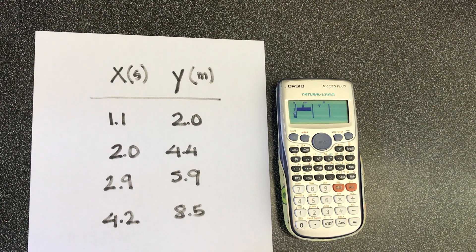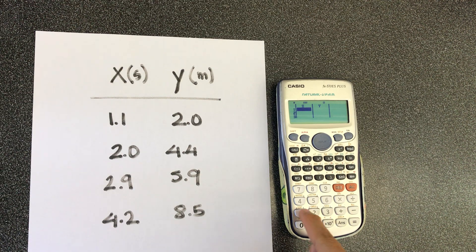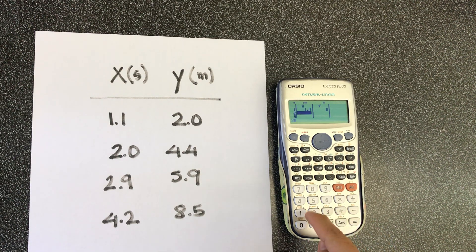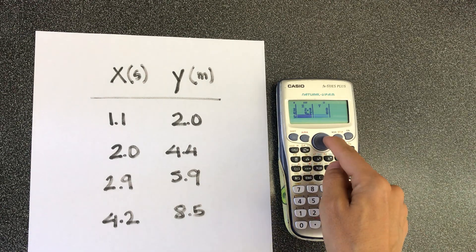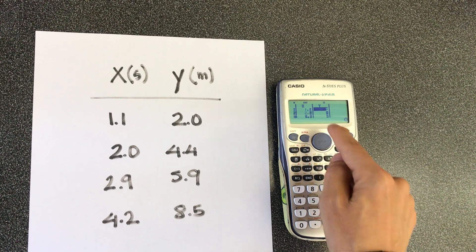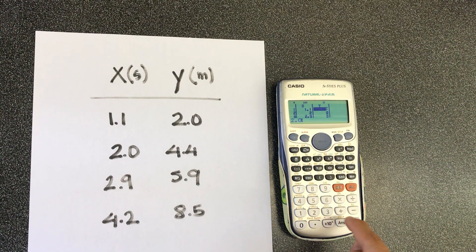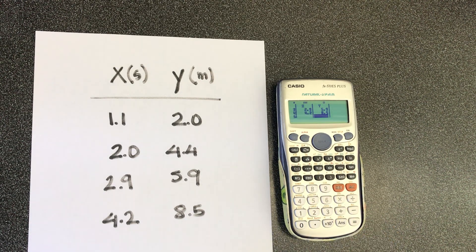You plug in the values in the table, and make sure all the values are in x first, then y. So, 1.1 equals 2.0 equals 2.9 equals 4.2 equals. And then I'm going to go into the y-axis. Yes, and 2.0, 4.4, 5.9, and then 8.5. All right?